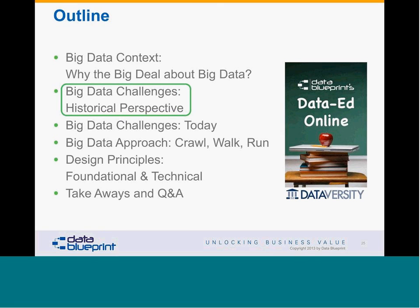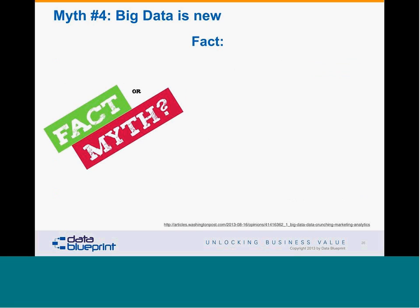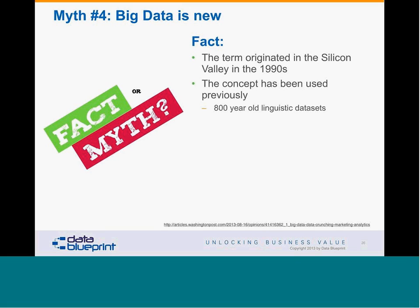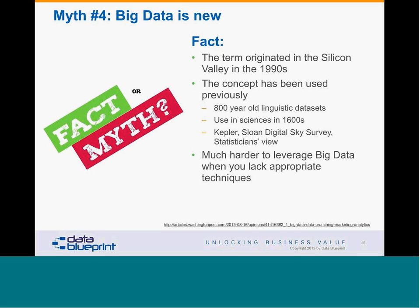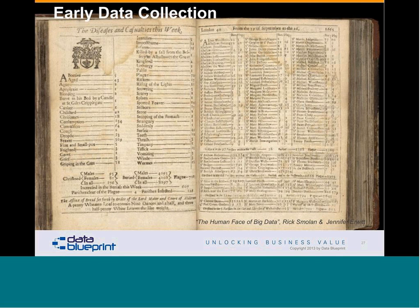Let's look at historical perspective. Myth four: big data is new. The term may have originated in Silicon Valley in the 1990s, but the concept existed long before. We can point to data sets hundreds of years old used in similar contexts. Early data collection includes something called the Book of Mortality, put together by John Grant in the 1650s when half the population of Europe was at risk of dying of the plague — and one in three actually did.